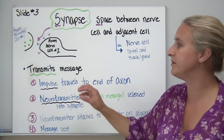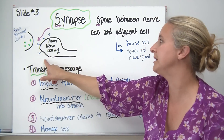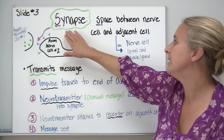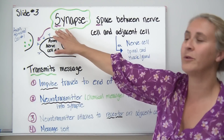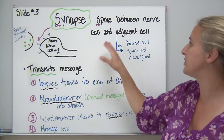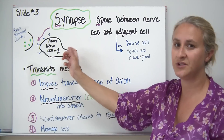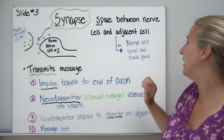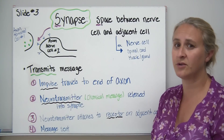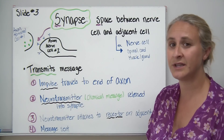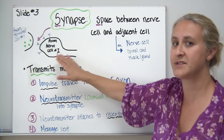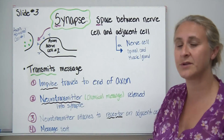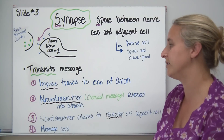For signals to travel from one neuron to the next, there is a space between those nerve cells called a synapse. The 'S' in synapse helps us remember it refers to the space between one nerve cell and the adjacent nerve cell it's sending the signal to. Nerve cells in the spinal cord might send a signal to a muscle or a gland — the adjacent cell doesn't always have to be a nerve cell.